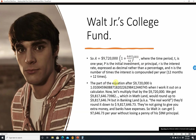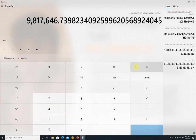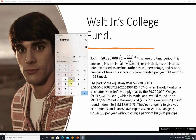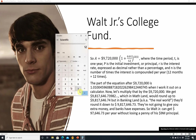So the part of the equation after $9,720,000 works out to approximately 1.01004596088 when I work it out on a calculator. And in case you don't believe me, we can do it right here. We're going to take 0.01 over 12 — we agree, that is this — and then we add 1 to it and we get this. And then we take this to the 12th power and we get 1.01004596088.